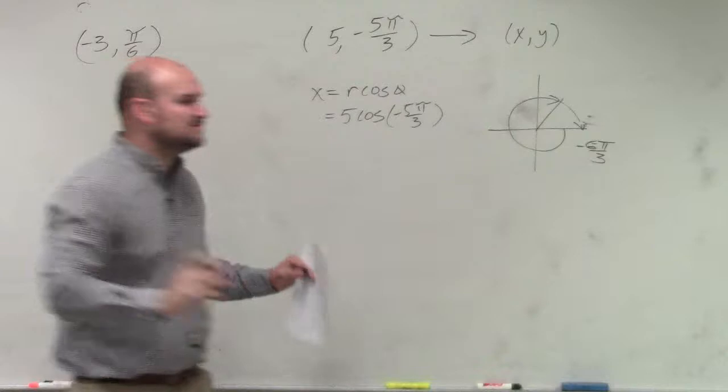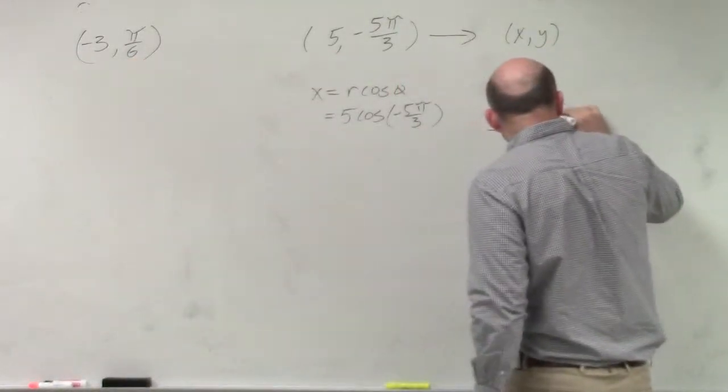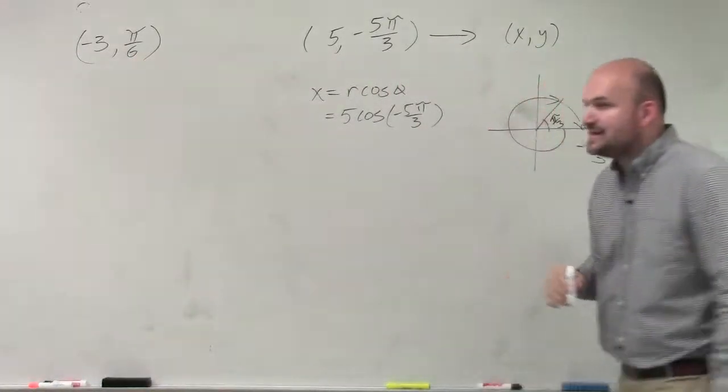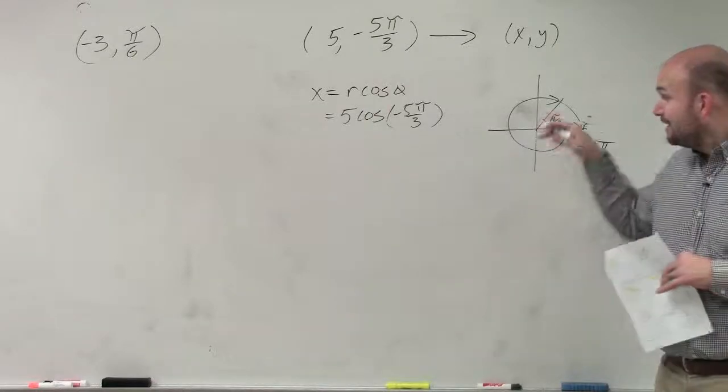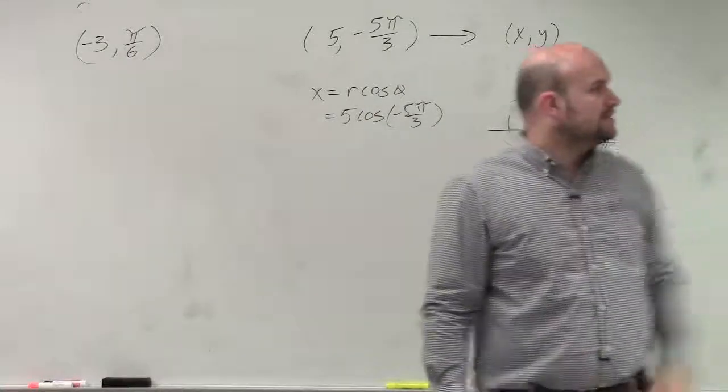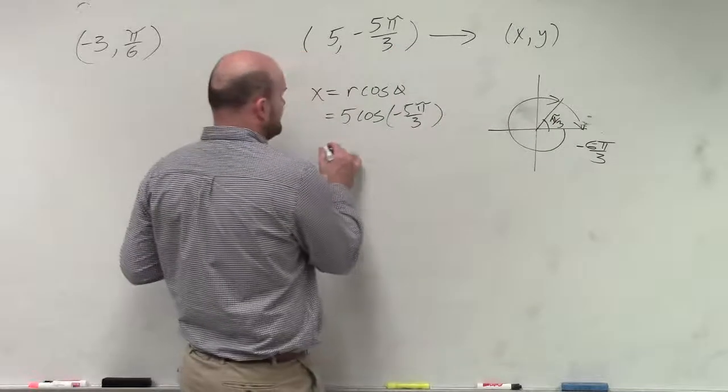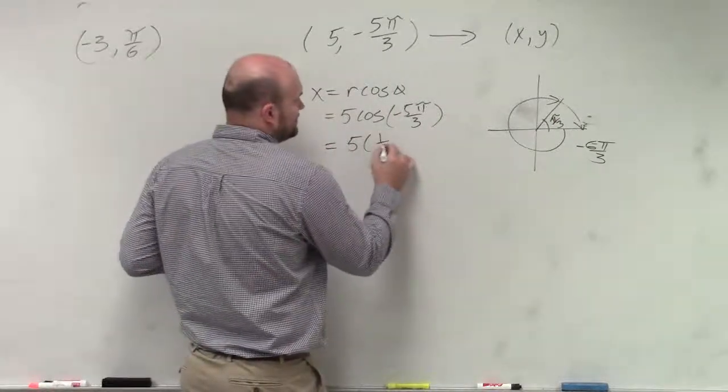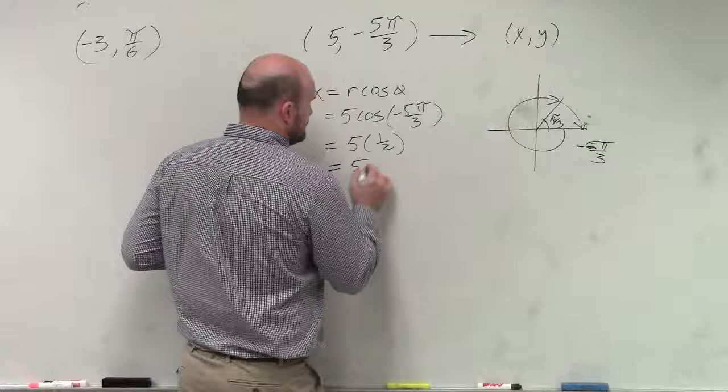But again, I don't really care so much about that. I just want to know how far is this away from the x-axis, which is pi over 3. And I also know it's in the first quadrant, so it's exactly the same as that pi over 3 over there. So therefore, I can say the cosine is equal to 1 half. So I have 5 times 1 half, which is equal to 5 halves.